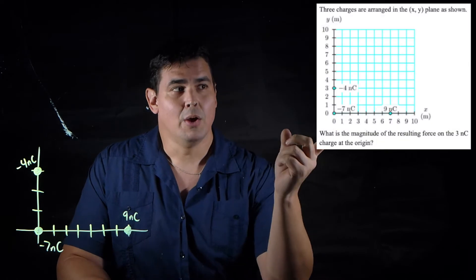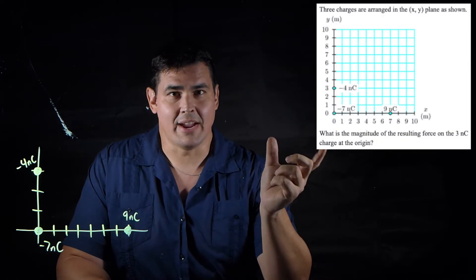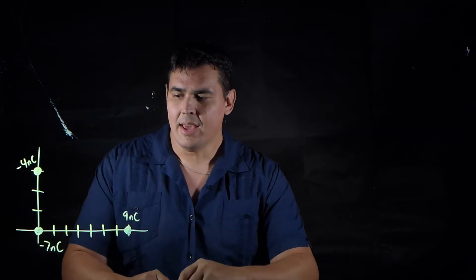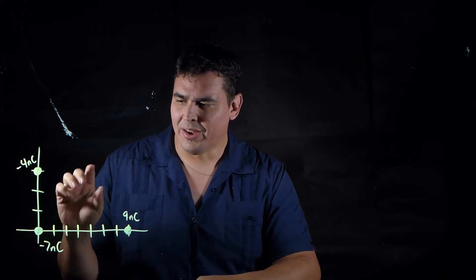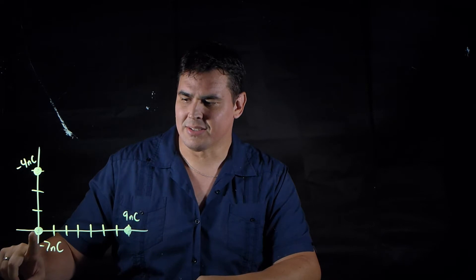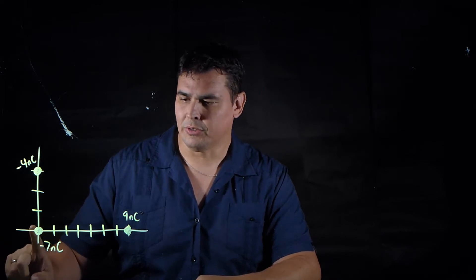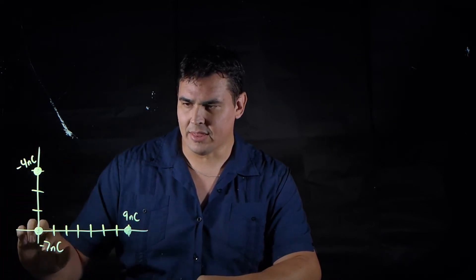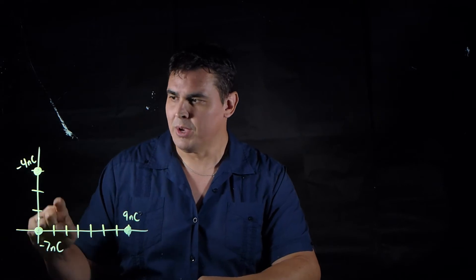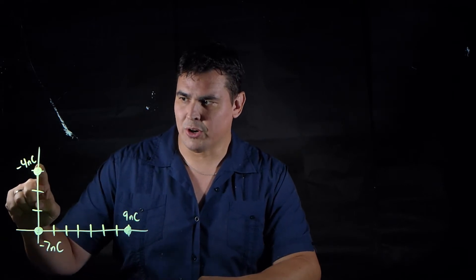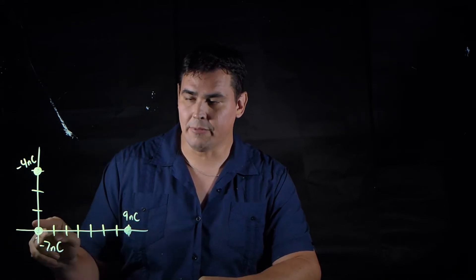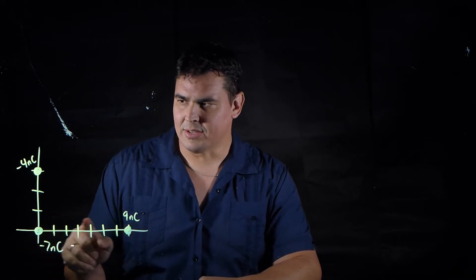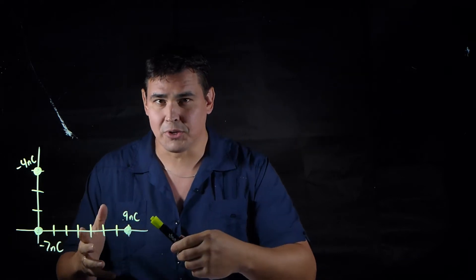Okay, so here's our problem. We're given this diagram, and it's telling us we have these three charges. I want to know what the net force is on this minus seven nanocoulomb charge. I have this grid that I can get the distances between the charges from. There's a minus four nanocoulomb charge up here three meters away, and there's a nine nanocoulomb charge over here seven meters away on the x-axis.